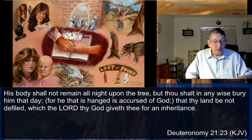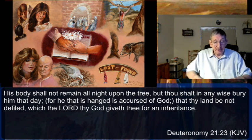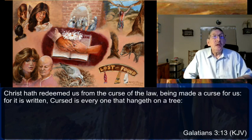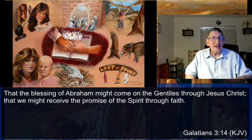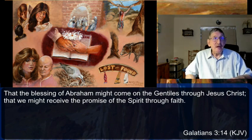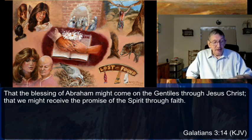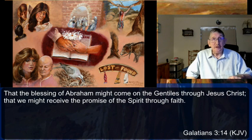Paul expands upon this verse in Galatians 3:13-14: 'Christ has redeemed us from the curse of the law, being made a curse for us, for it is written, Cursed is everyone that hangeth on a tree, that the blessing of Abraham might come on the Gentiles through Jesus Christ, that we might receive the promise of the Spirit through faith.' Jesus not only died in our place but also took the place as the cursed of God — hung on a tree in open shame and degradation. He received the curse which we deserved.